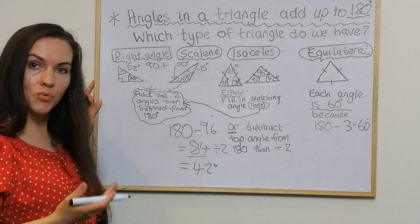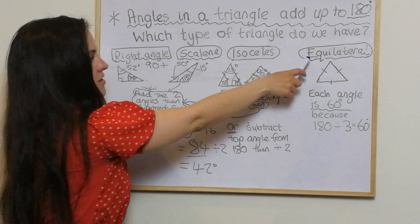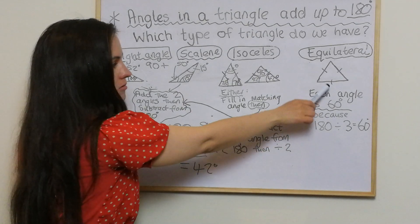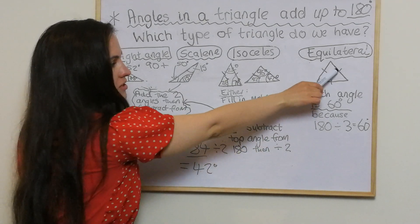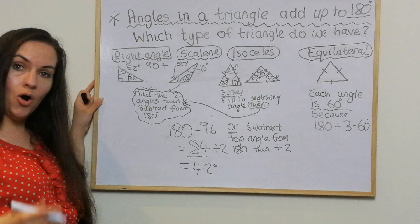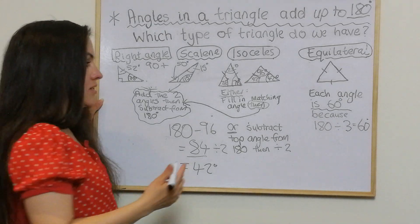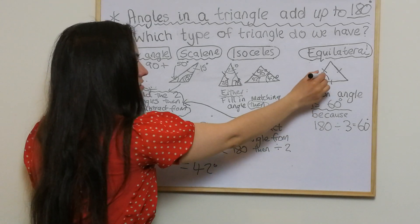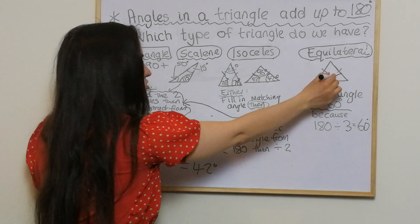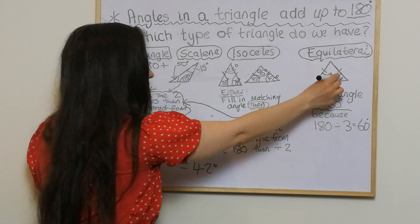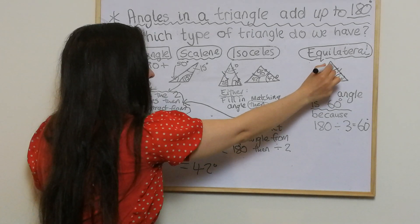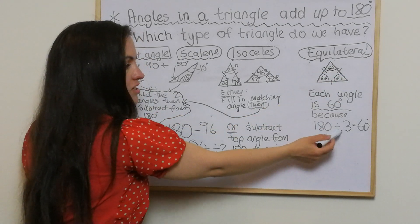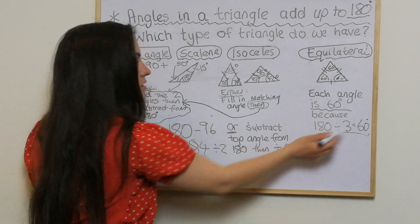In an equilateral triangle it's very simple — each angle is just 60 degrees. All the sides are the same so all the angles are also the same. The reason is that 180 divided by 3 gives 60.